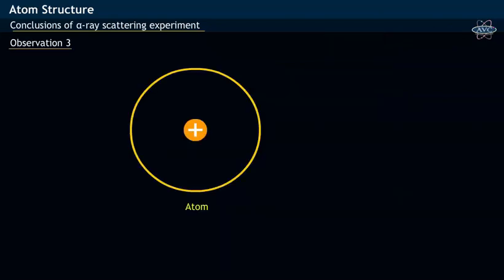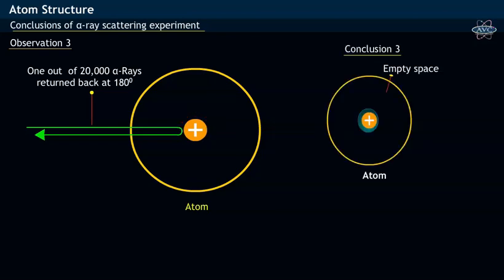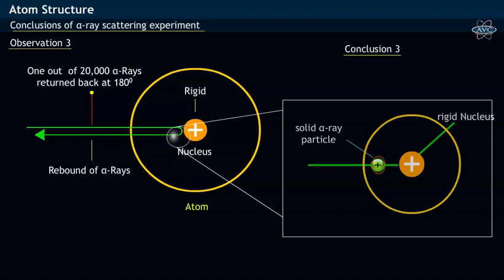The final observation was that only 1 out of 20,000 alpha ray particles bounced back at 180 degrees along alpha ray path. From this observation, Rutherford concluded that nucleus is rigid and rebound of positively charged alpha rays is due to direct collision of intense and heavy positively charged mass.